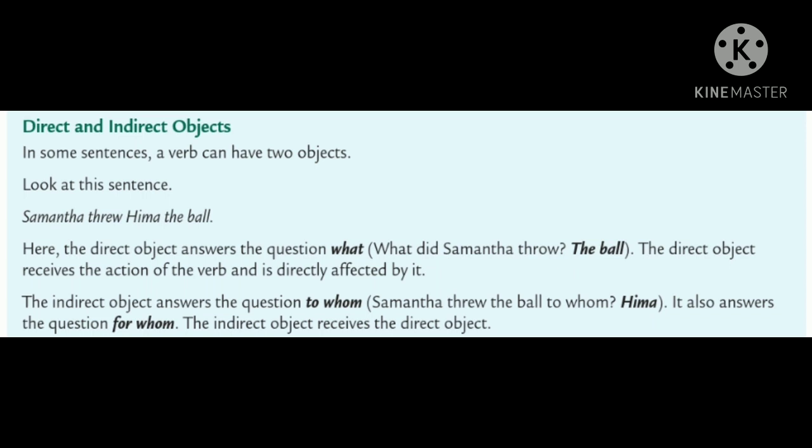Now we have direct and indirect objects. In some sentences, a verb can have two objects. Look at this sentence: Samantha threw Hema the ball.